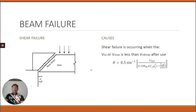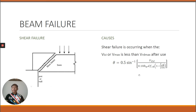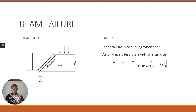The next failure type is shear failure. Shear failure occurs when the maximum shear force VEd from the shear force diagram is more than the maximum shear resistance VRd,max. The first angle theta to use is 22 degrees. If we still get VEd greater than VRd,max, we change theta to 45 degrees and then calculate a new theta. If after changing from 22 to 45 degrees the condition still holds, the structure has failed due to shear and we must redesign the section.